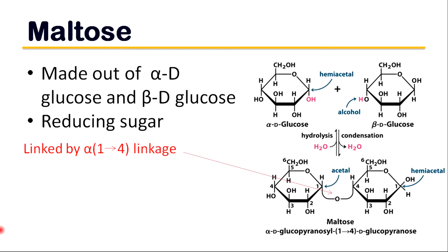Maltose is made from alpha-D glucose and beta-D glucose with an alpha-1,4 linkage. Maltose is also a reducing sugar.